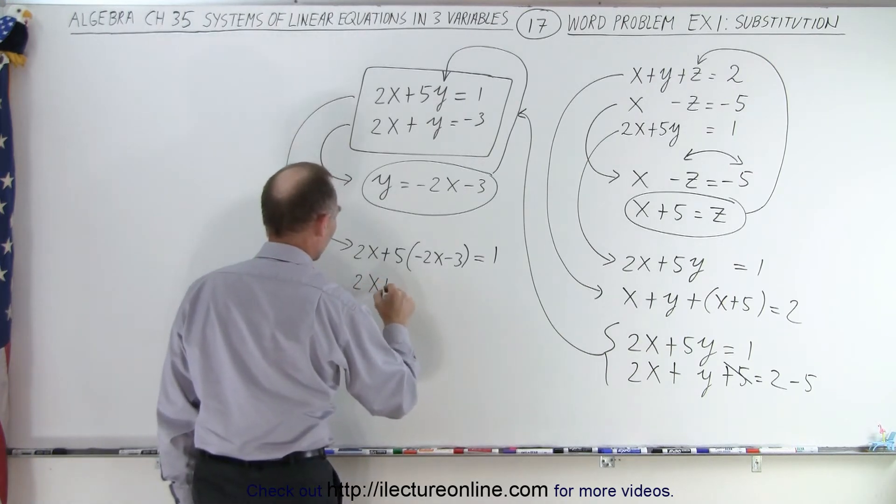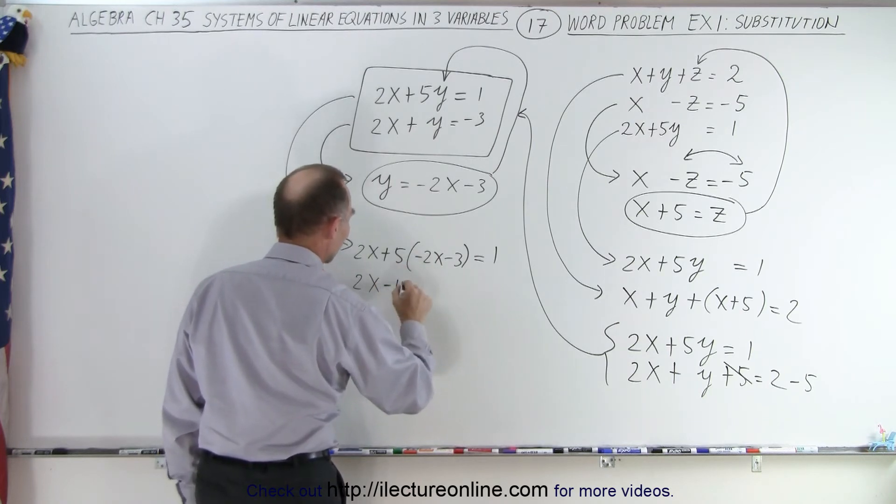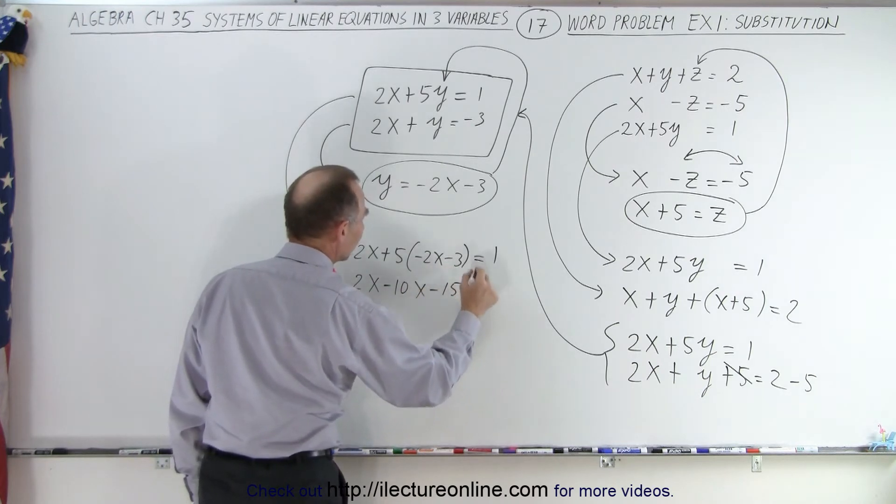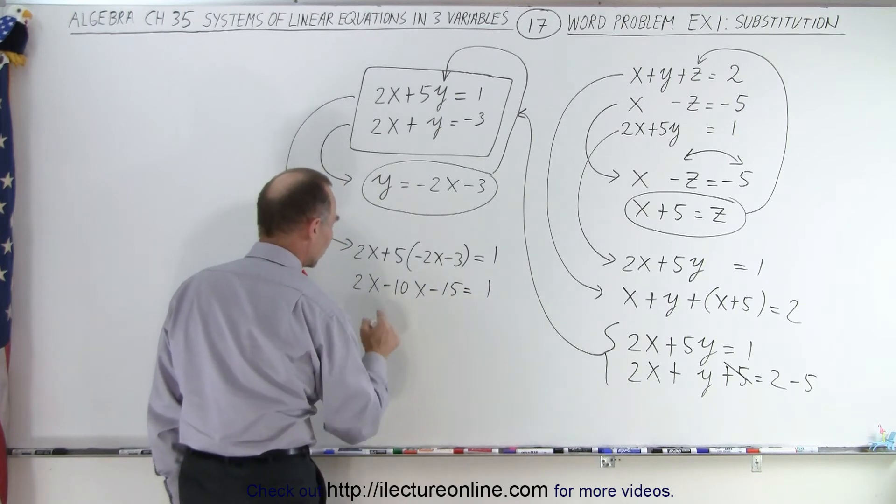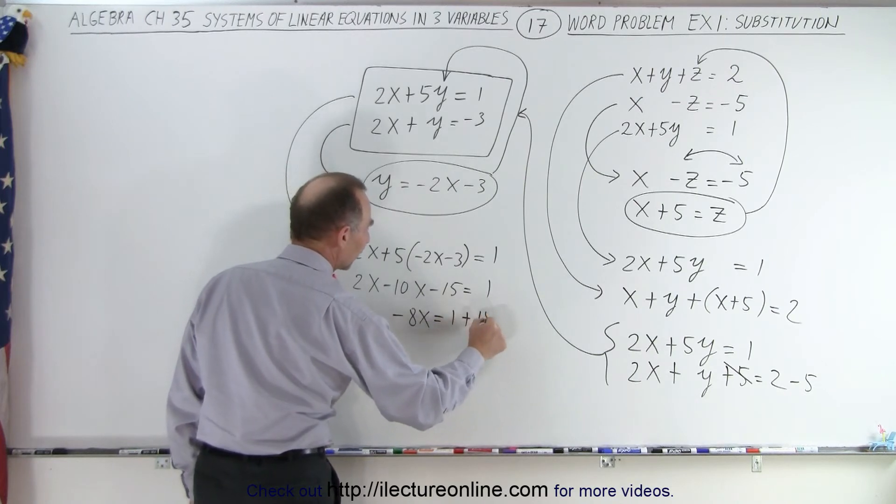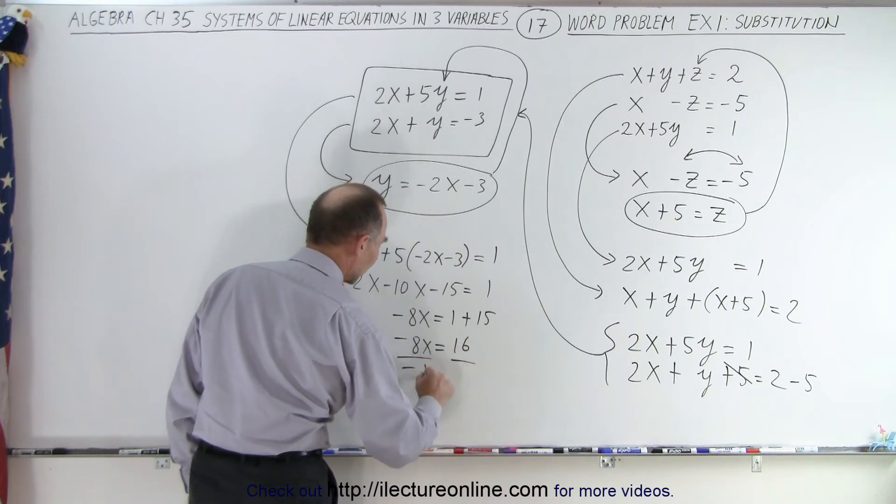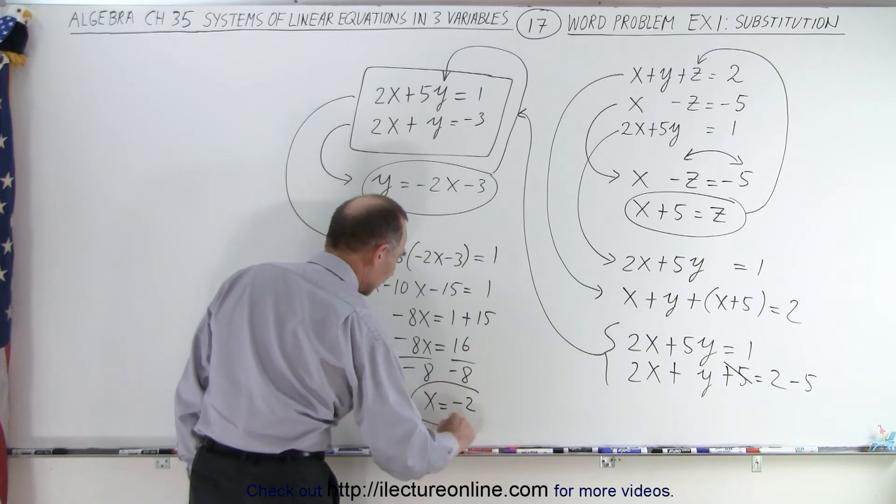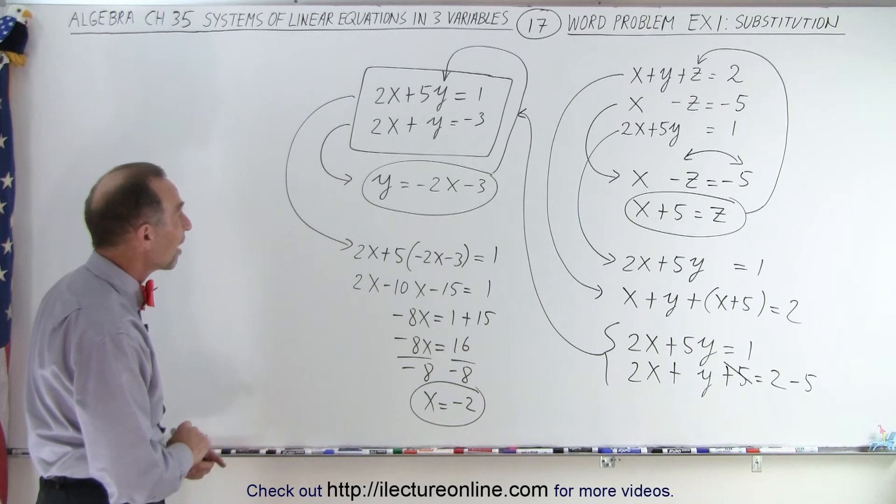So we end up with 2x plus, not plus because 5 times the negative 2 is a negative 10x, and 5 times the negative 3 is minus 15 is equal to 1. Move the negative 15 over here, add these two together, 2x minus 10x is minus 8x is equal to 1 plus 15, minus 8x is equal to 16, divide both sides by negative 8, and we get x is equal to negative 2. And there we are, the first variable x equals negative 2 is now found.